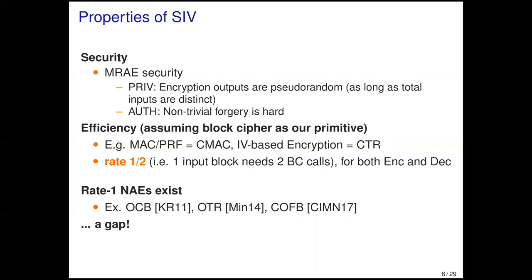To consider the efficiency of SIV, suppose we use a block cipher. Then SIV needs a MAC or PRF and an IV-based encryption, and each can be realized by some modes, say CMAC and counter mode. This means that the rate is one-half for encryption and decryption, where the rate means the number of input blocks that can be processed by one primitive call. We note that rate-1 nonce-based AE is indeed possible, for example using OCB. This means that to build an MRAE by SIV, we have an efficiency gap.